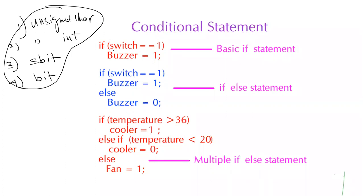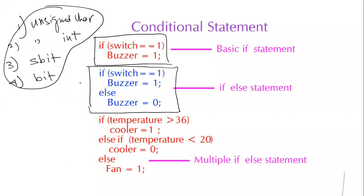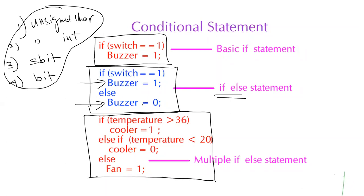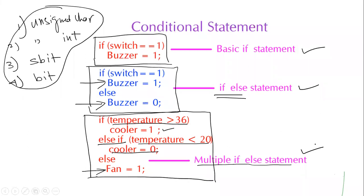Next are conditional statements. The first is a simple if structure: if the condition is true, do this. The second is an if-else structure: if the condition is true, do this; else, do something else. The third is a multiple if-else construct with multiple conditions: if condition 1 is true do this, else if condition 2 is true do this, else do this. These three structures are sufficient for very complex decision-making in embedded C programming.